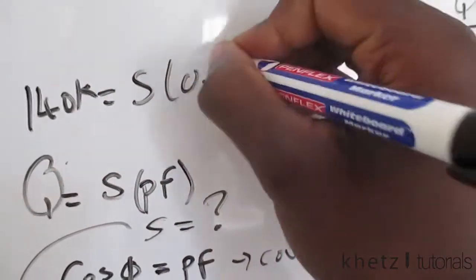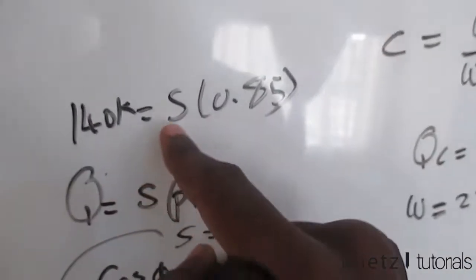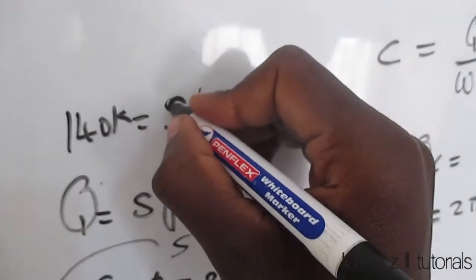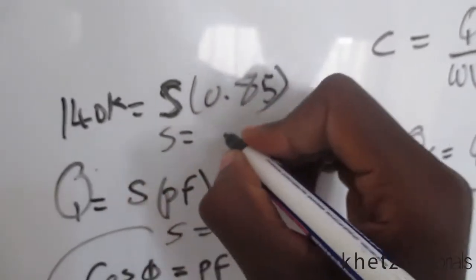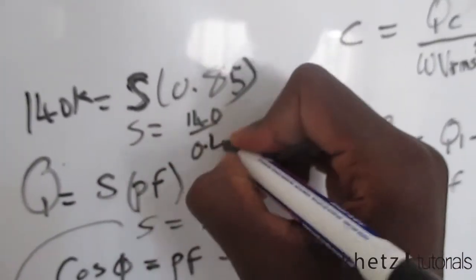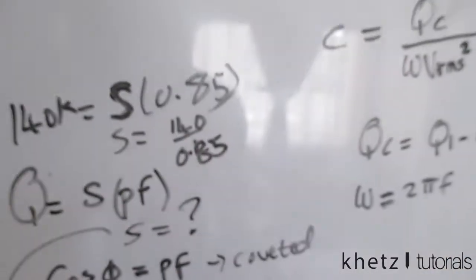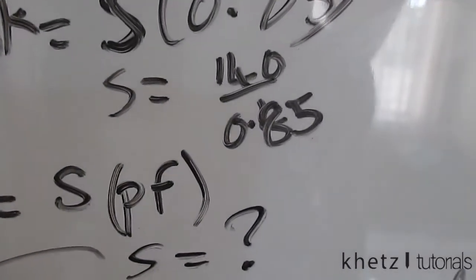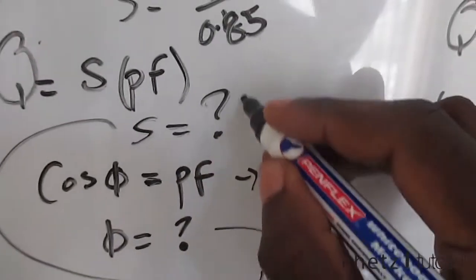We're also given the power factor, so you'd actually find the value of your apparent power. You just say S is equal to 140 divided by that. After finding the value of your apparent power, you then keep it. Let's keep that value.